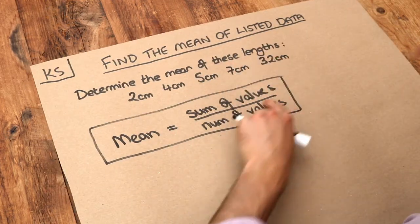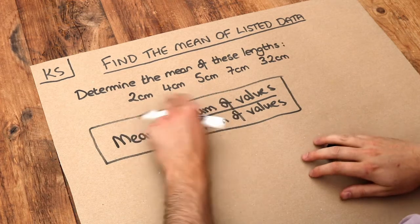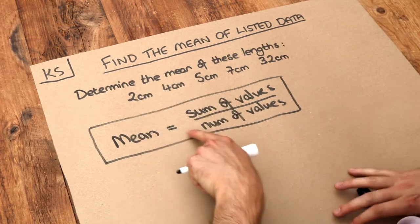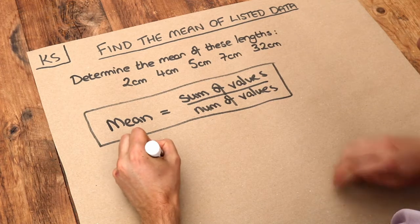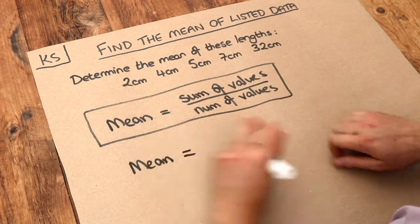So you've got this example here we've got these different lengths in centimeters and we want to find the mean of these. So according to this formula we need to find the sum of the values, we need to add them up.